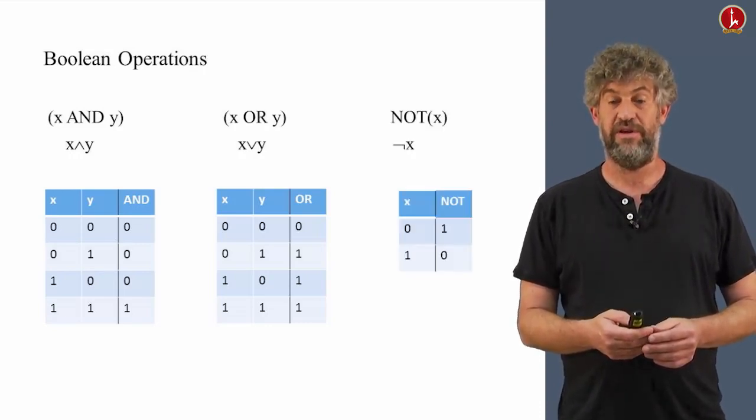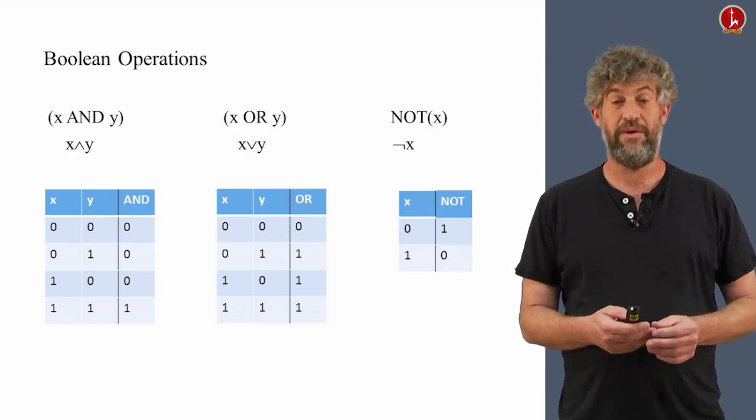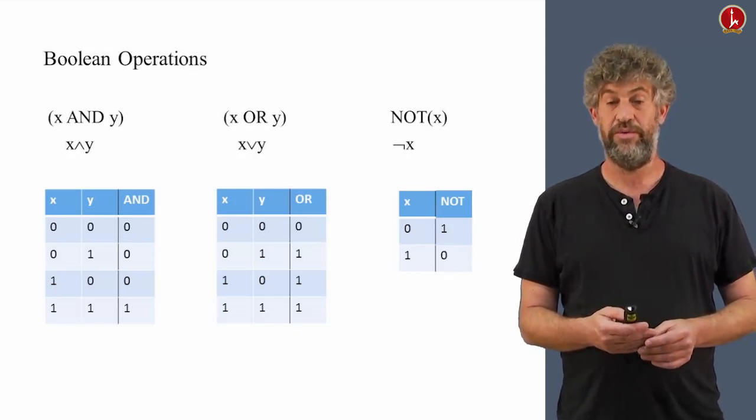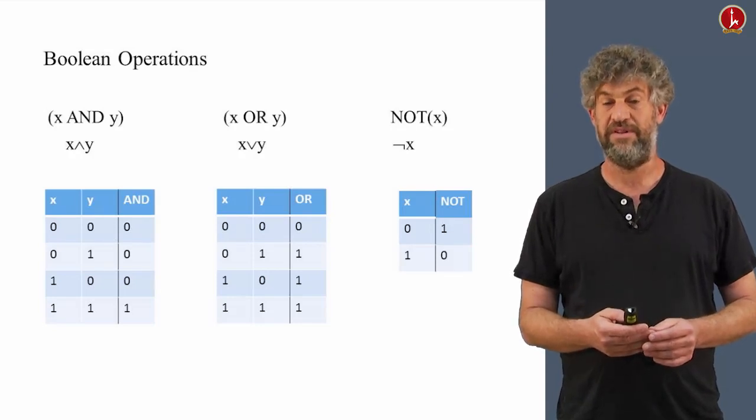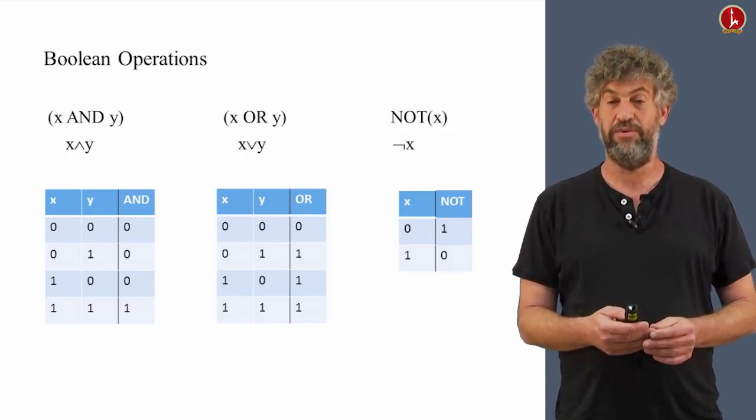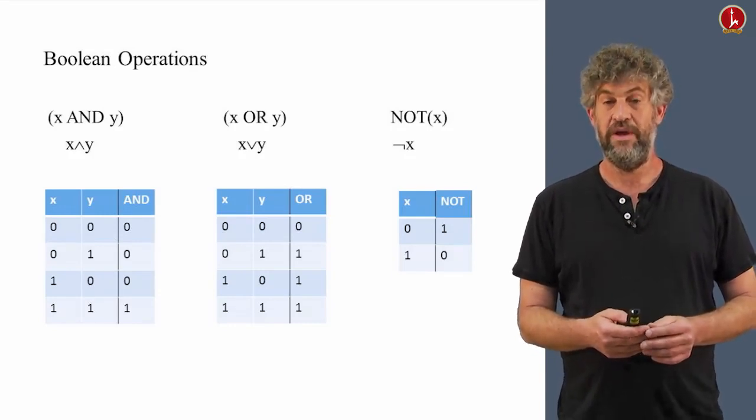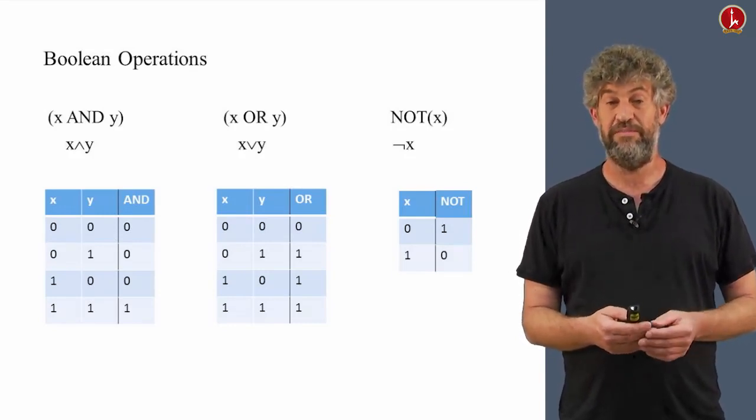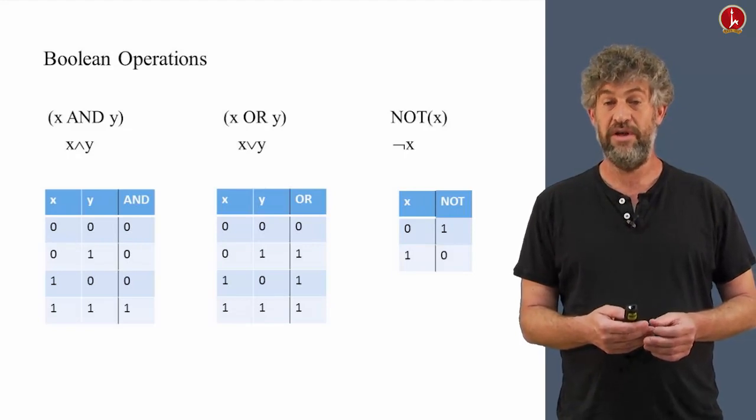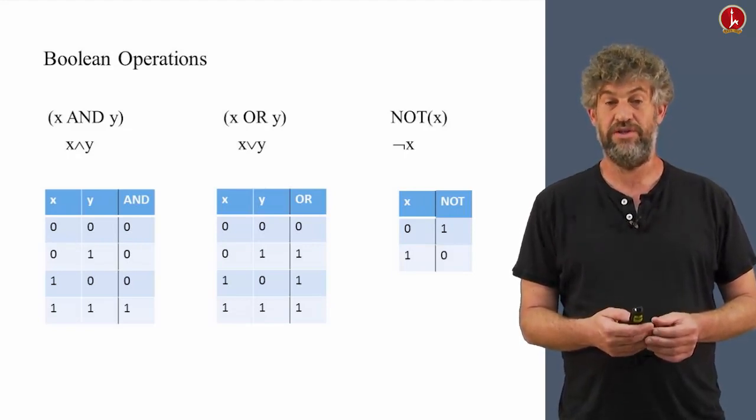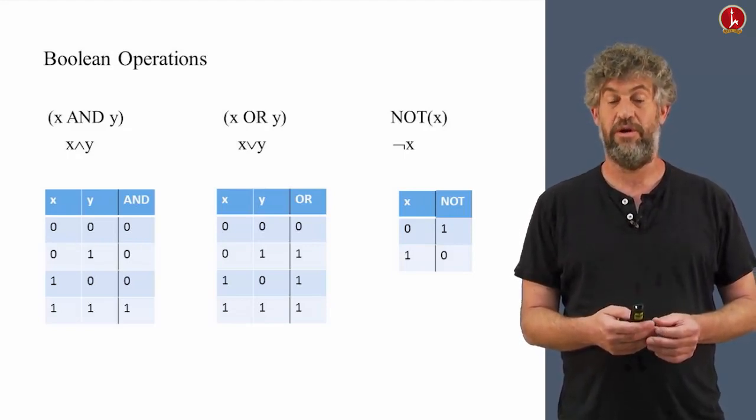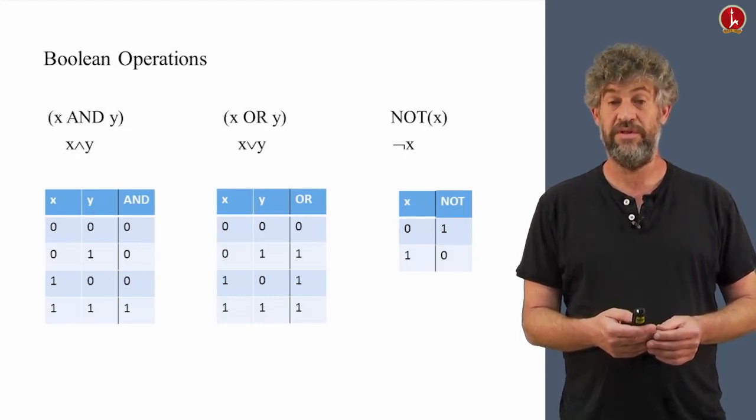And here's a third interesting operation. This one is a unary operation. It only takes a single input bit as input, x, and returns the opposite of it. So if the input is zero, the output is one. If the input is one, the output is zero. These are possible very simple operations on Boolean numbers, sort of like addition and multiplication are operations on integers or on real numbers. These are operations on Boolean numbers.